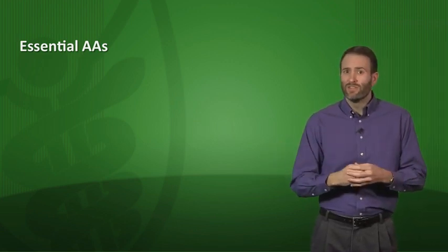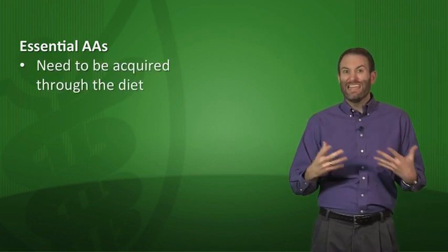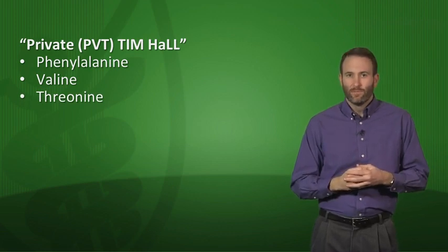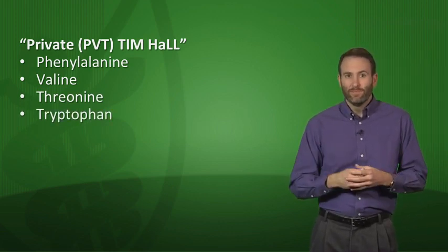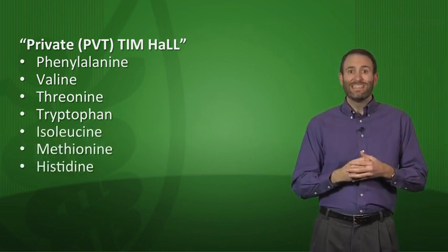What is an essential amino acid? Essential amino acids need to be acquired through the diet — we can't synthesize them. A great mnemonic is 'PVT TIM HaLL': P is phenylalanine, V is valine, T is threonine, then T is tryptophan, I is isoleucine, M is methionine, H is histidine, and the two L's stand for leucine and lysine.